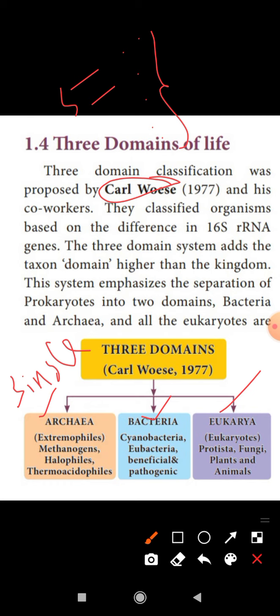Extremophiles live in extreme environmental conditions. For example, they can live in conditions of very high salinity, very high temperature, or high methane environments. Examples include hydrothermal vents, volcanic hot springs, and polar caves. Organisms living in these extremely harsh environmental conditions are collectively called extremophiles.